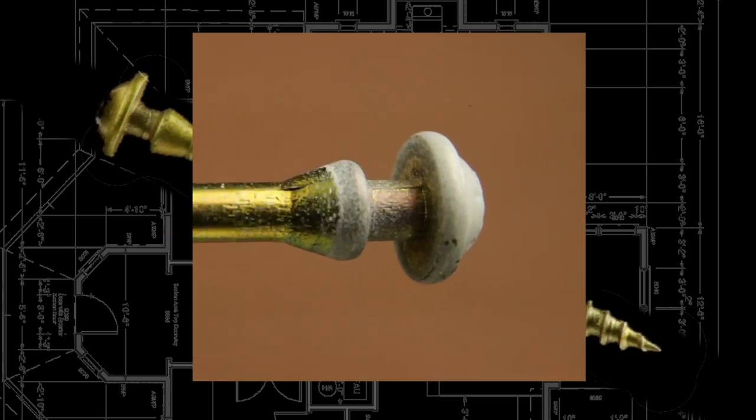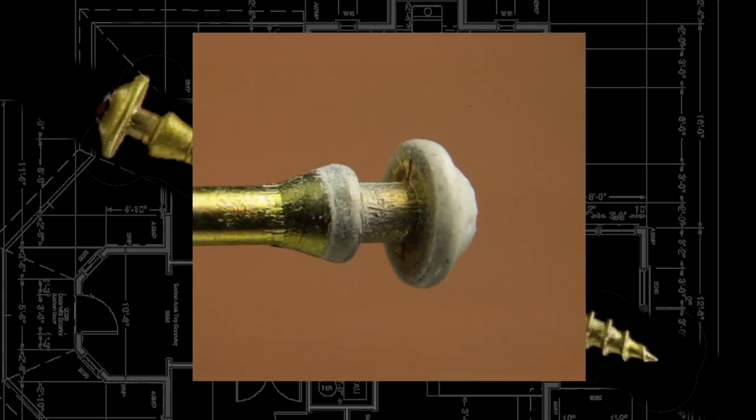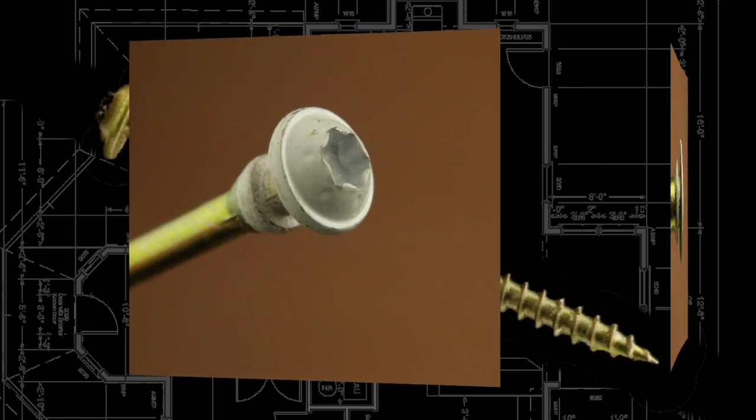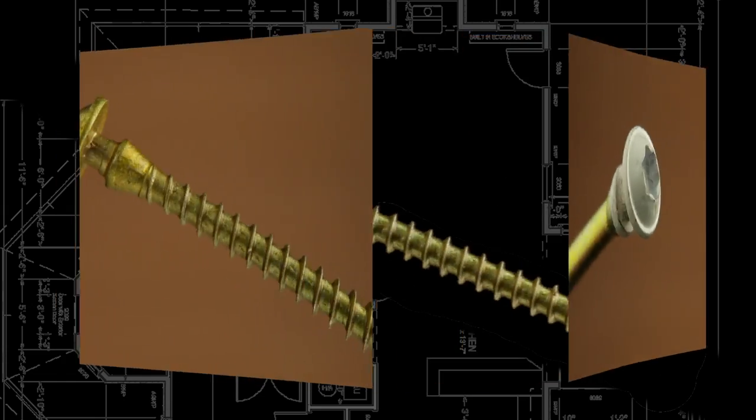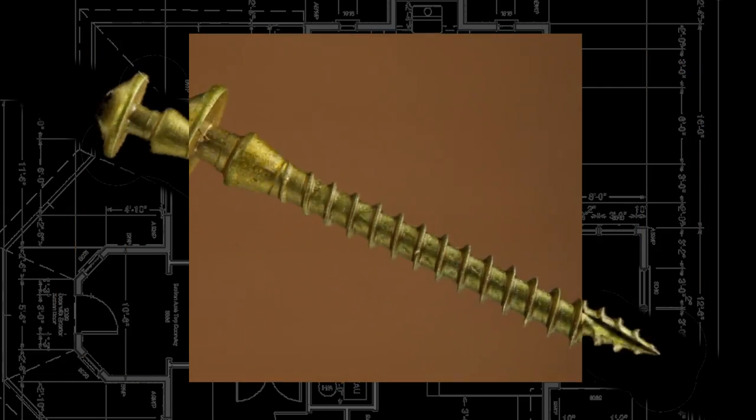The patented washer head creates a tight draw to ease installation. The recessed star drive eliminates stripping with its six points of contact. Case hardened steel eliminates twisting and snapping.